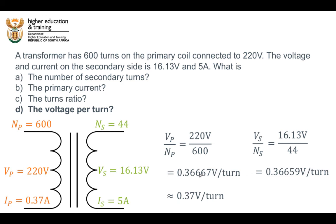It's not exactly the same because we rounded the number of turns, but it's pretty much the same — we can also say it's approximately 0.37 volts per turn. When they ask you for the voltage per turn, it doesn't really matter which route you take, using the primary values or the secondary values, because you will get the same answer in both cases.